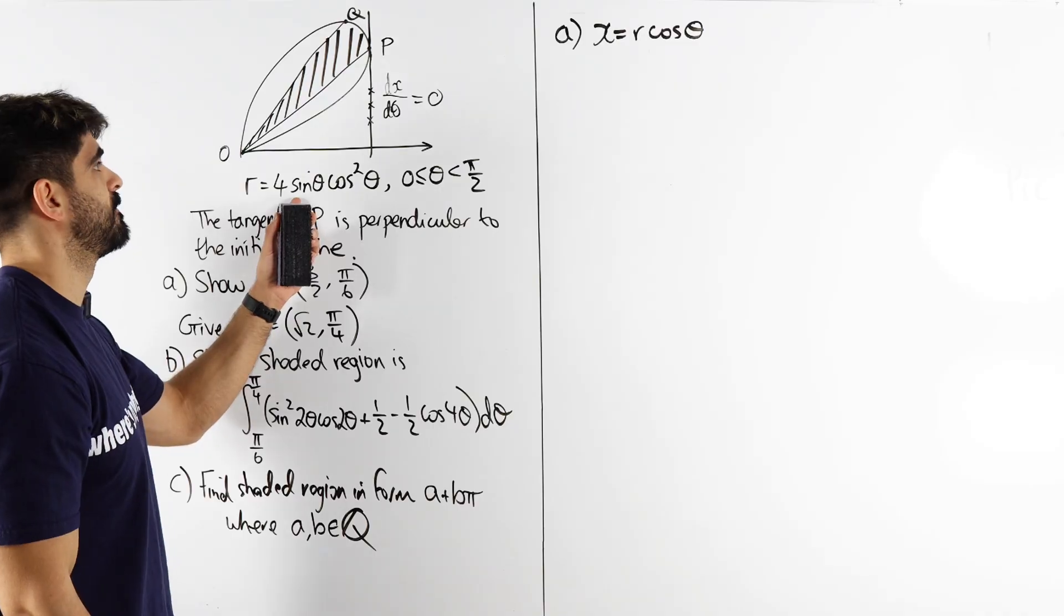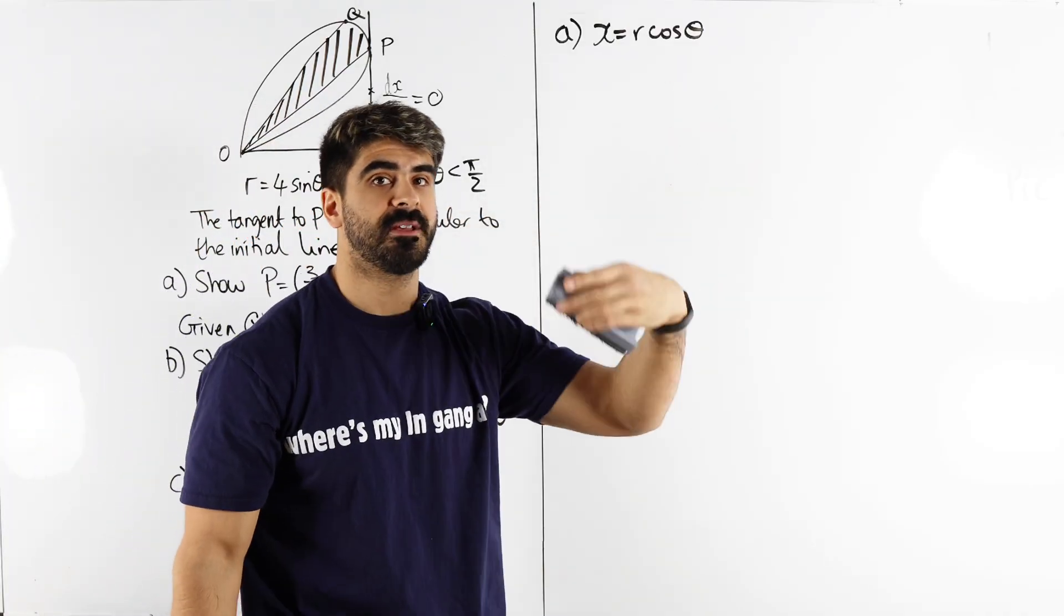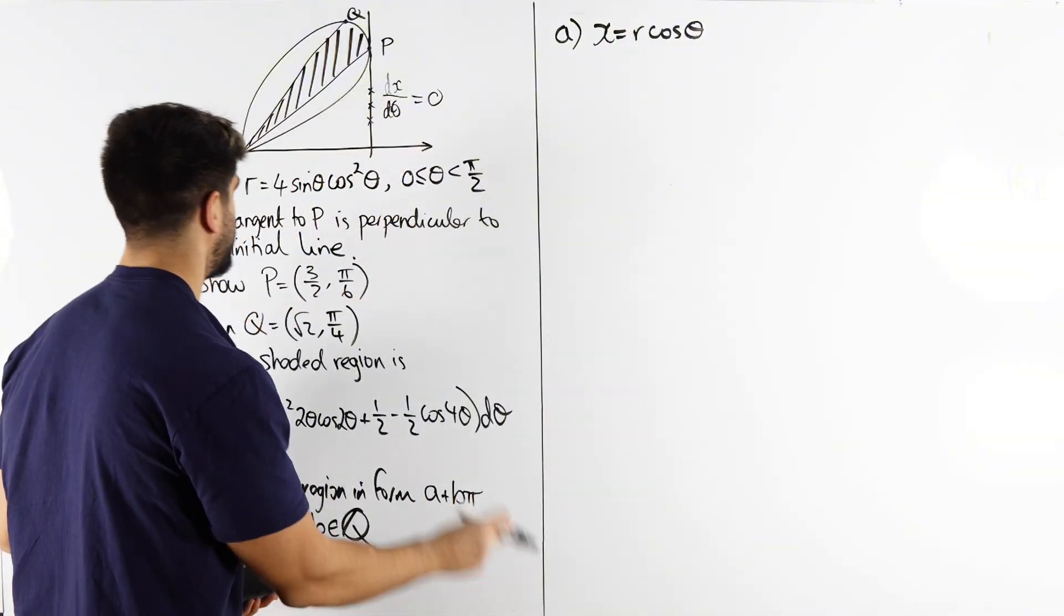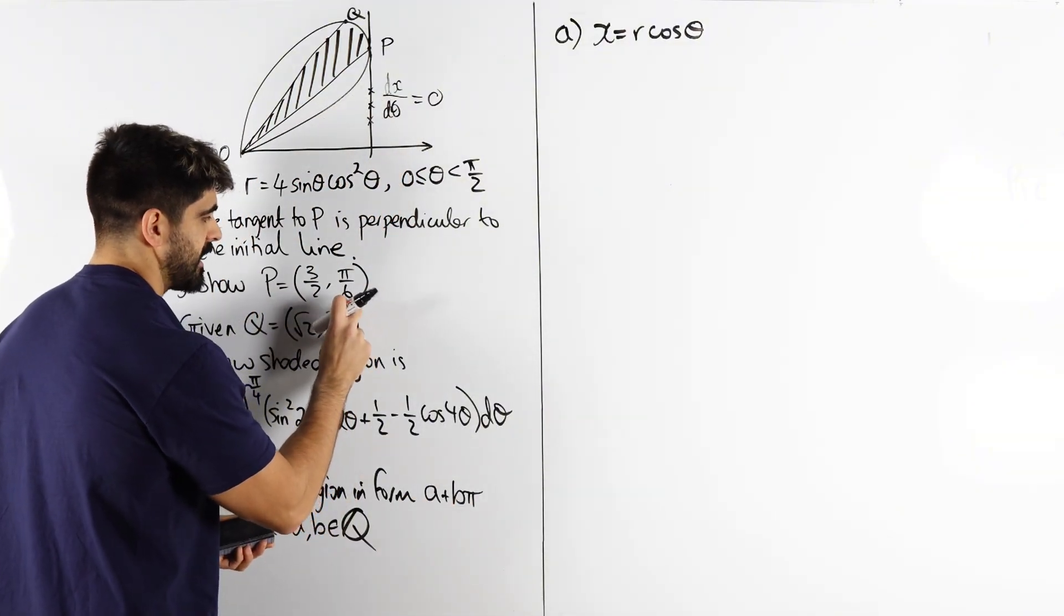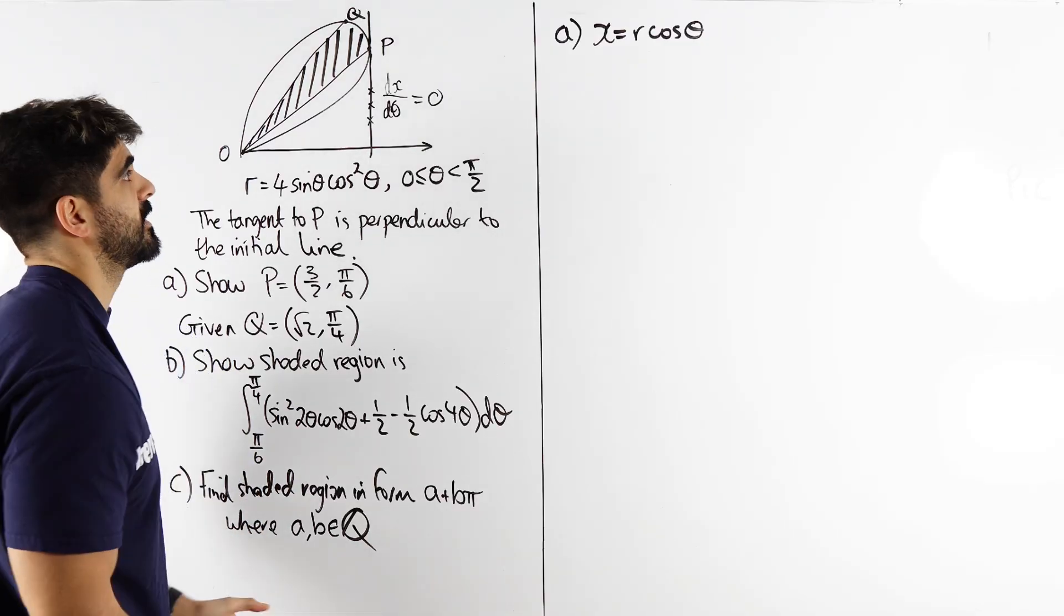And x is this. We're going to have to differentiate to make it equal to zero and prove that the theta value we get is pi over six.